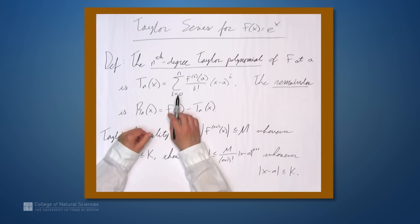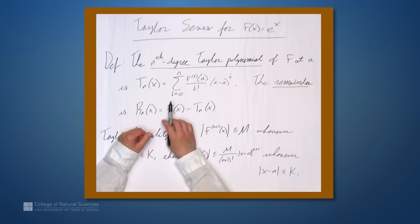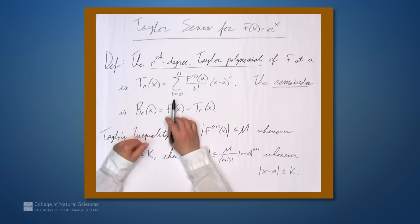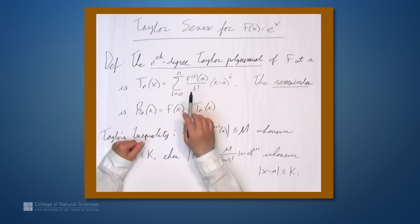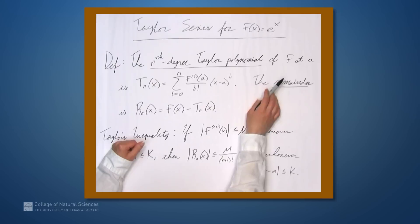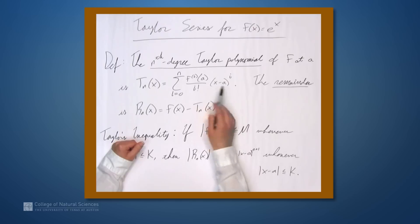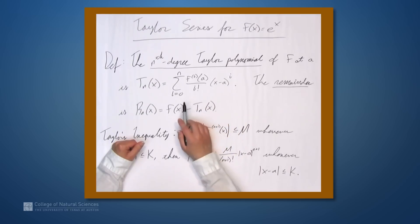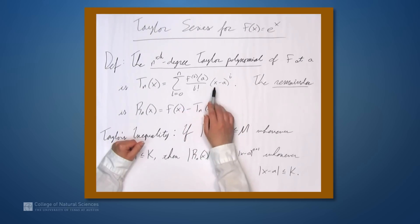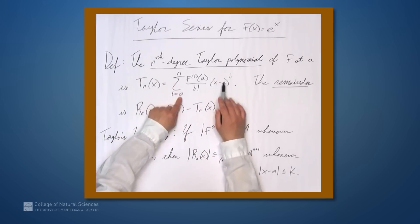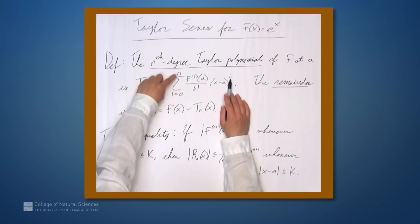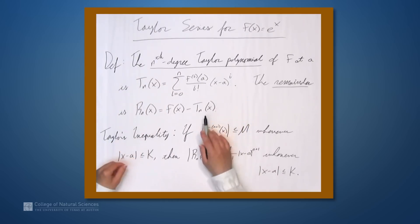We're here at the example table, and in this video we're going to be talking about the Taylor series for f equals e to the x. Let's first remind ourselves of two definitions. The nth degree Taylor polynomial of f at a is this expression — it's a truncated Taylor series, where we're adding up the terms from (x-a) to the 0 all the way up to the (x-a) to the nth term.